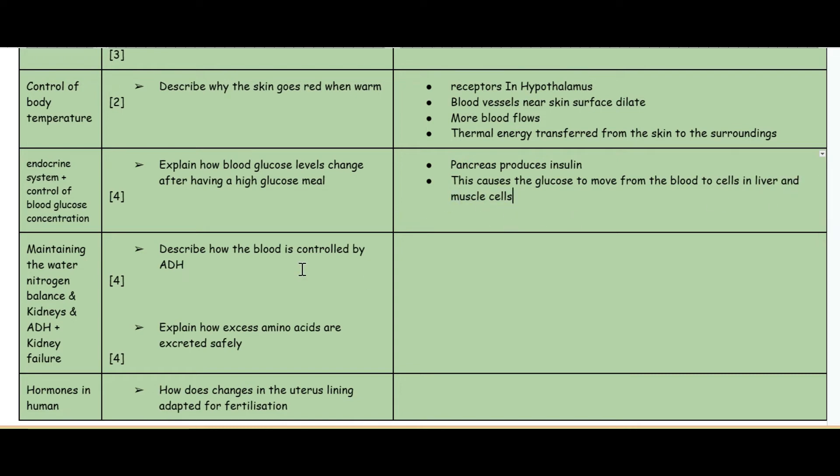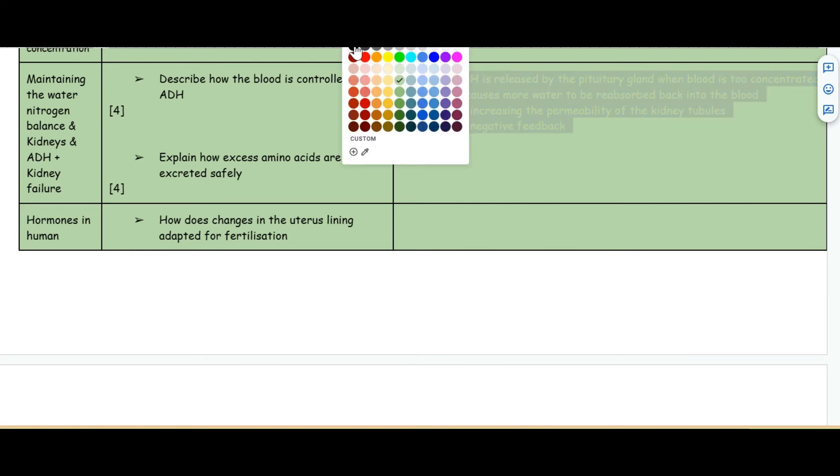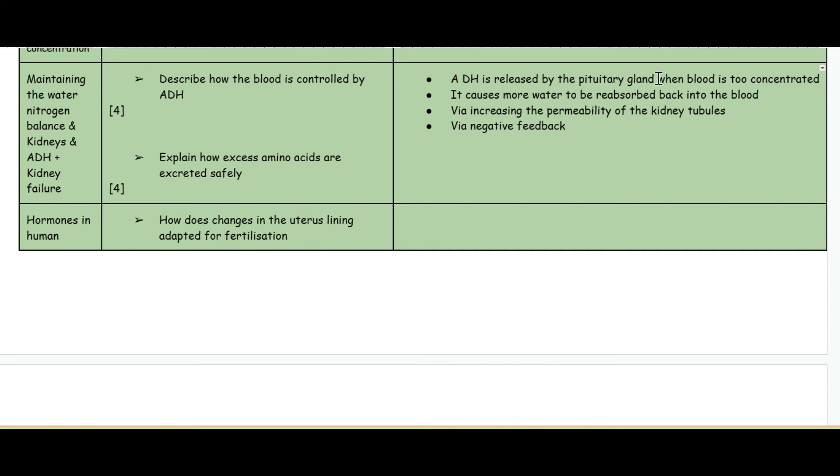The next subtopic: maintaining water nitrogen balance, ADH and kidney failure. Describe how the blood is controlled by ADH hormone. ADH is released by the pituitary gland when blood is too concentrated, when there's not enough water. This then causes more water to be reabsorbed back into the blood by increasing the permeability of the kidney tubules. It basically makes the cells in the kidney that form the kidney tubules more absorbent of water. Because it's more absorbent, it absorbs more water and less water is used as urine. It's quite important that you mention negative feedback.